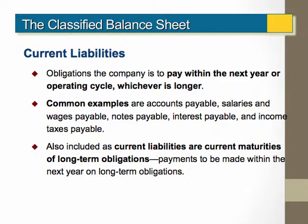Current liabilities are obligations of the company that we intend to satisfy or pay within the next year or operating cycle. Examples of current liabilities are accounts payable and salaries, notes, interest, and income taxes. Pretty much anything where you see the word payable is a liability. We also include the current portion of long-term obligations. For instance, if you were to go out and buy a car with a car loan, the payments for months 1 through 12 are considered current, whereas periods 13 and thereafter would be considered long-term. So keep in mind that even though you have a long-term loan, there may be portions of it that are current.